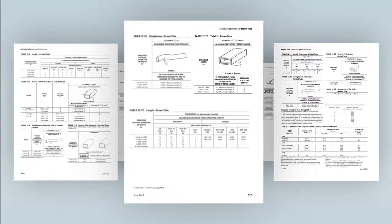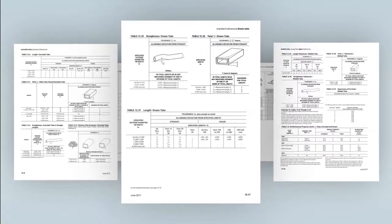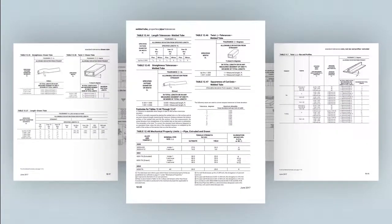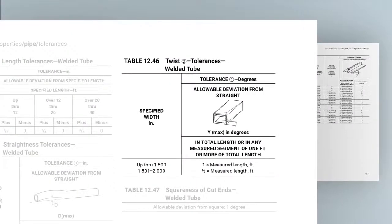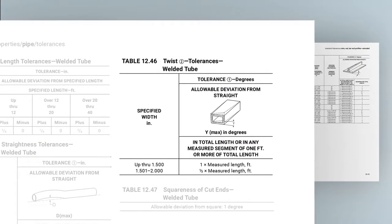Twist tables are read the same way as tables for flatness tolerances, as discussed in our video covering flatness. The main difference is that twist tables provide tolerances in degrees of angular rotation per foot of length within specific total limits.